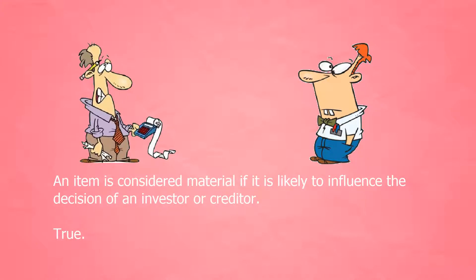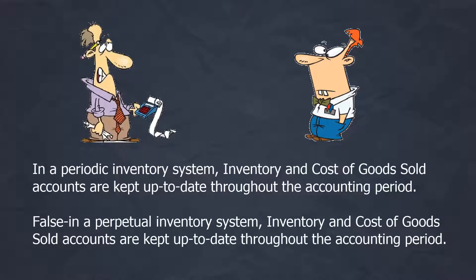In a periodic inventory system, inventory and cost of goods sold accounts are kept up to date throughout the accounting period. False. In a perpetual inventory system, inventory and cost of goods sold accounts are kept up to date throughout the accounting period.